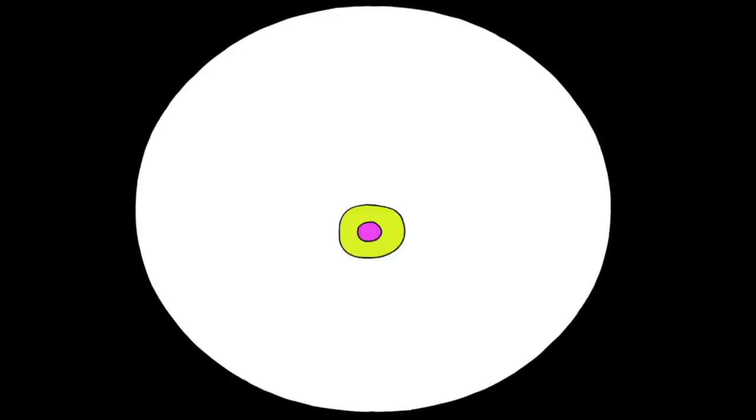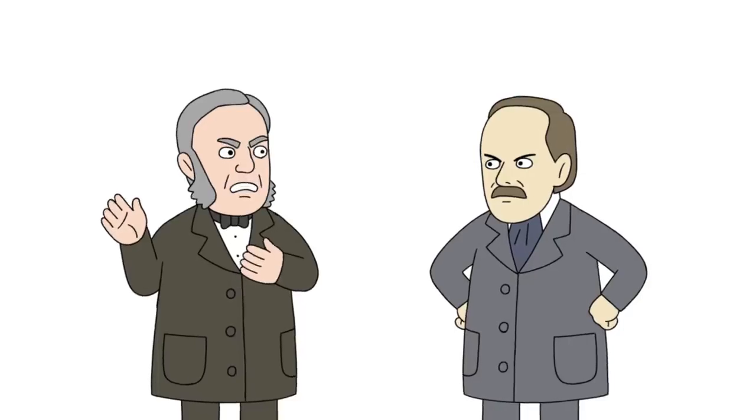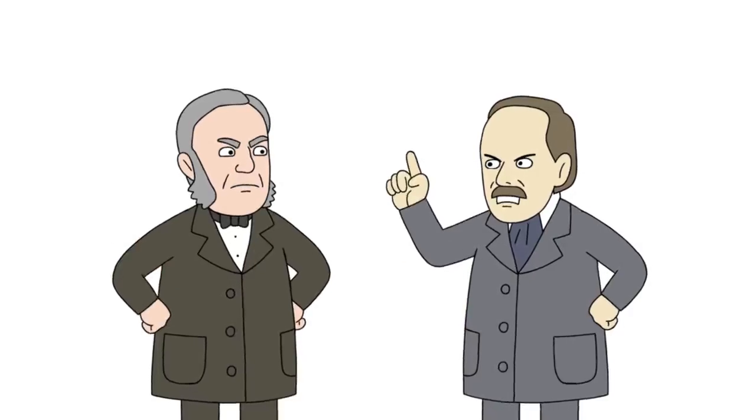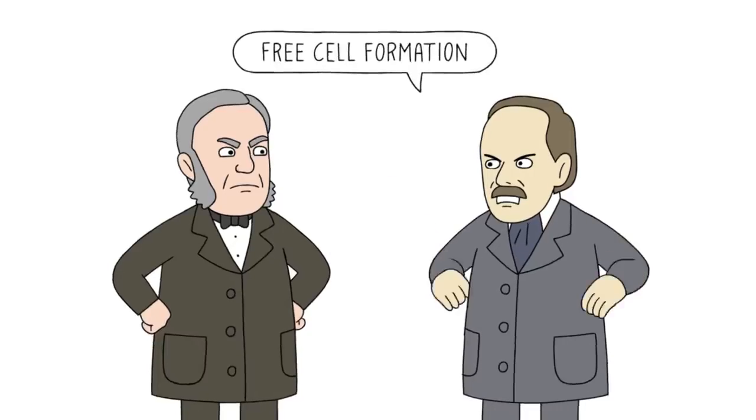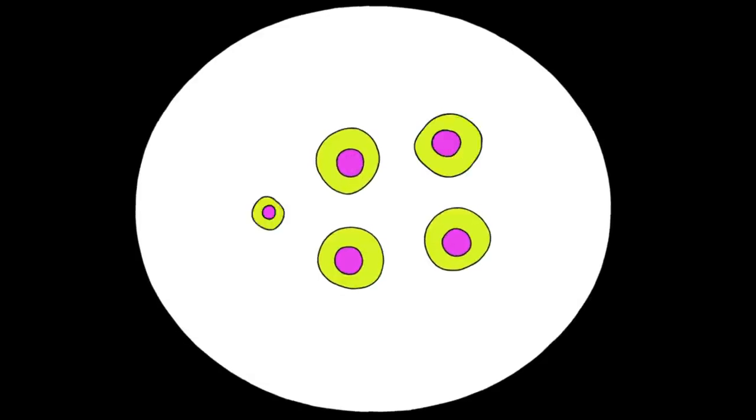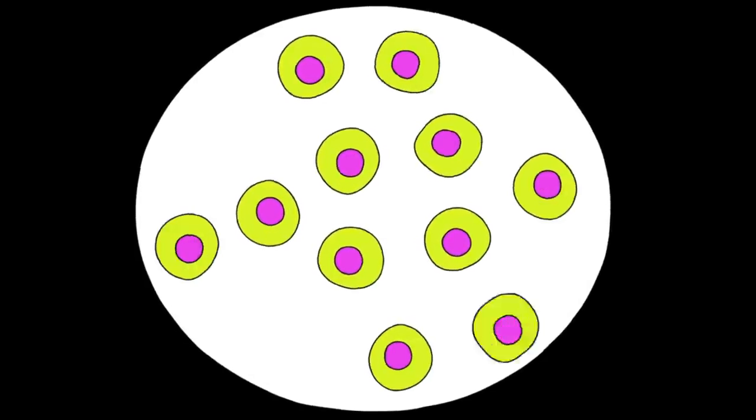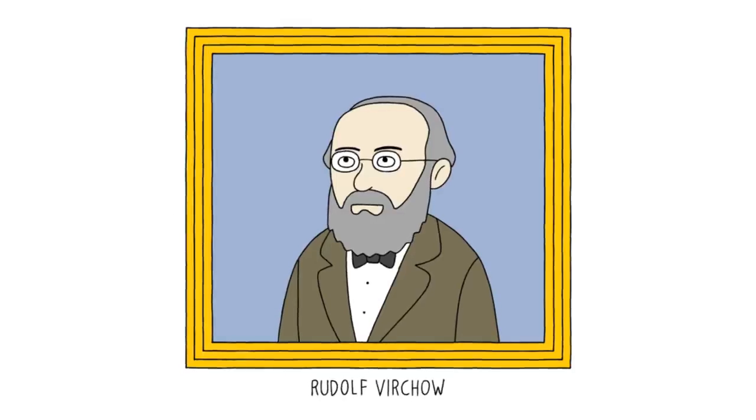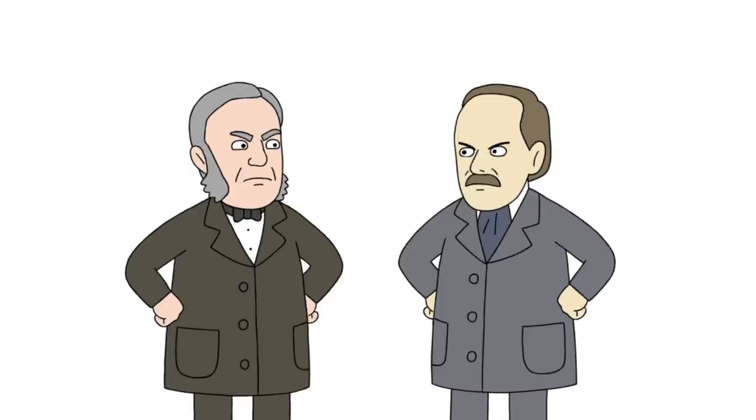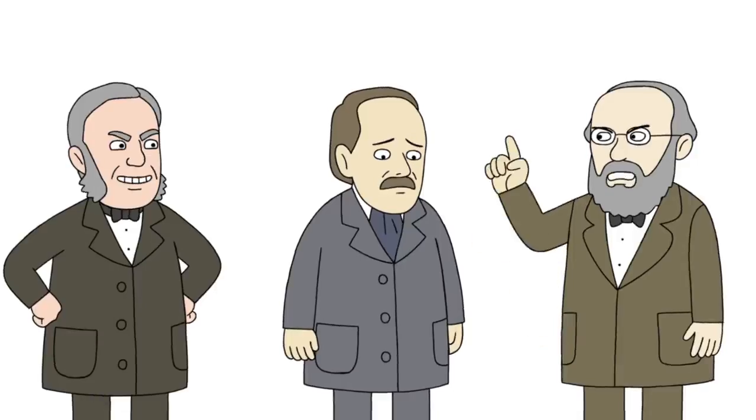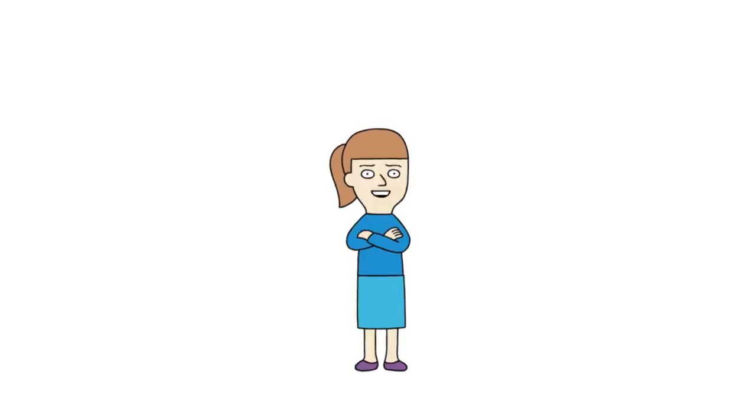A bone of contention arose between them, as for the last part of the cell theory, that cells come from pre-existing cells. Schleiden didn't exactly subscribe to that thought, as he swore cells came from free cell formation, where they just kinda spontaneously crystallized into existence. That's when another scientist named Rudolf Virchow stepped in with research showing that cells did come from other cells.